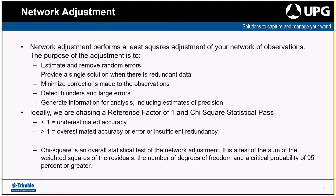It could also be that you've got an error in there — pole height was wrong, wrong prism constant, or there's not enough redundancy and you need to add more observations. Chi-squared is the overall statistical test of the network; it looks at the sum of the weighted squares of the residuals, the degrees of freedom, and the critical percentage against the 95% confidence interval. A lot of it's set up in your project settings — if you've got a good template set up, you could have one already configured for network adjustments with all your constraints ready.